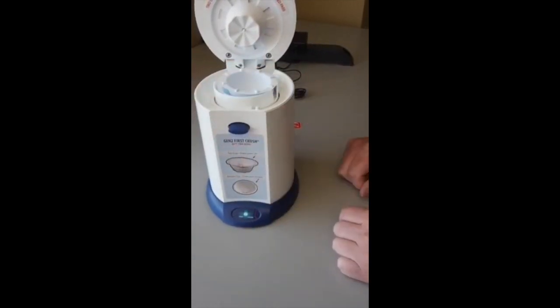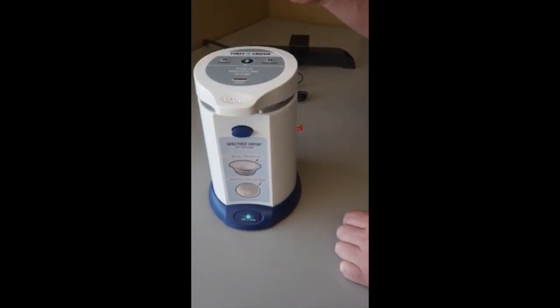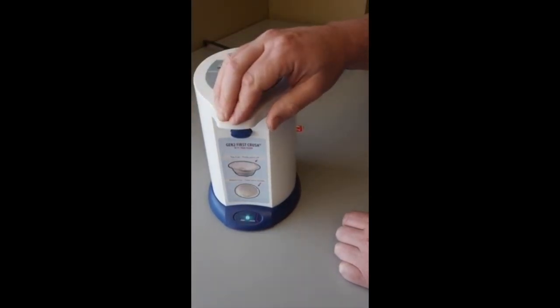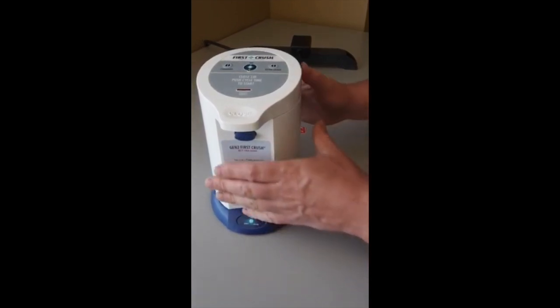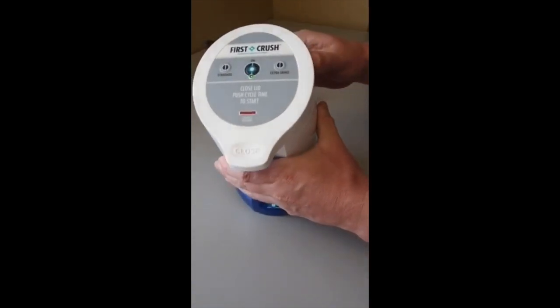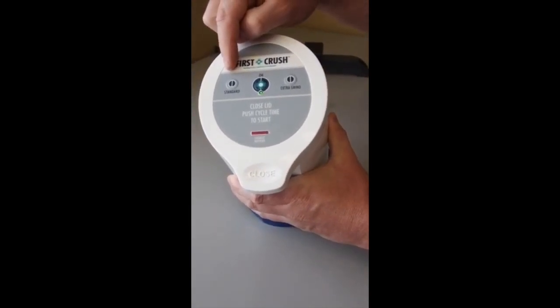Once the pills are placed in the bottom cup, the top cup is placed on top, and you simply close the lid. When you close the lid fully, you'll hear a little click that indicates that the lid is locked and cannot be opened during the crushing cycle. This is to avoid any exposure to the staff of the crushed medication.